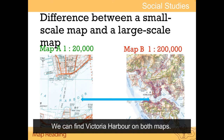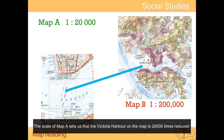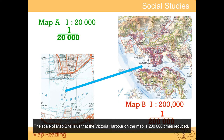We can find Victoria Harbour on both maps. But the harbour in Map A seems larger than that in Map B. The scale of Map A tells us that Victoria Harbour on the map is 20,000 times reduced, and the scale of Map B tells us it is 200,000 times reduced.